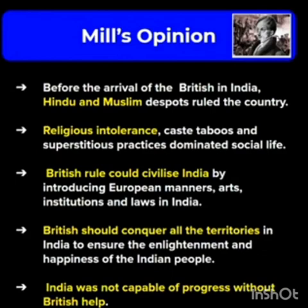Mill thought that all Asian societies were at a lower level of civilization than Europe. Before the arrival of the British in India, Hindu and Muslim despots ruled the country. Religious intolerance, caste, taboos, and superstitious practices dominated social life. British rule could civilize India by introducing European manners, arts, institutions, and laws in India.